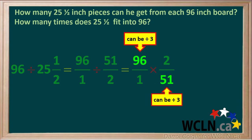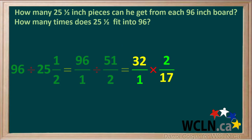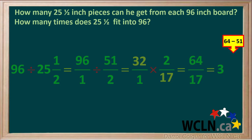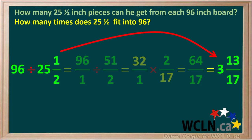Notice the diagonals 96 and 51 can both be divided by 3. Dividing 96 by 3 gives us 32, and dividing 51 by 3 gives us 17. So we are left with 32 over 1 times 2 over 17. Multiplying the numerators, 32 times 2 gives us 64, and multiplying the denominators, 1 times 17 gives us 17. So we are left with the fraction 64 over 17. This is an improper fraction, so we need to convert it to a mixed number. 17 goes into 64 three times; 17 times 3 equals 51. The remainder is 64 minus 51, which is 13, giving us 13 seventeenths. Our final answer is 3 and 13 seventeenths.